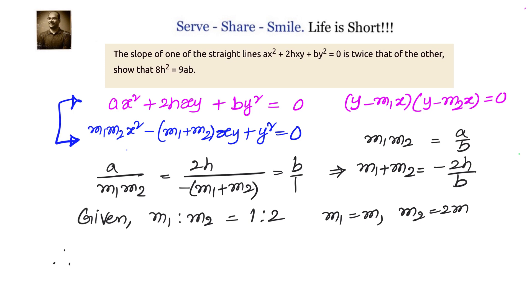Now, let us substitute that in the conditions we got. M1 + M2 = 3M = -2H/B, or M = -2H/3B. What is M1M2? A/B. But M1M2 is M × 2M, so 2M² = A/B.